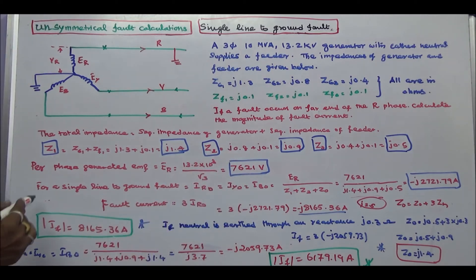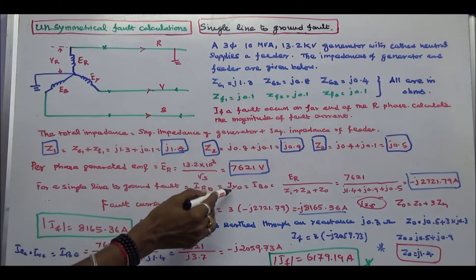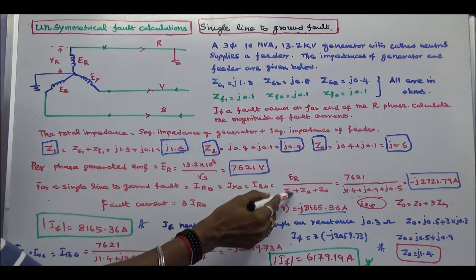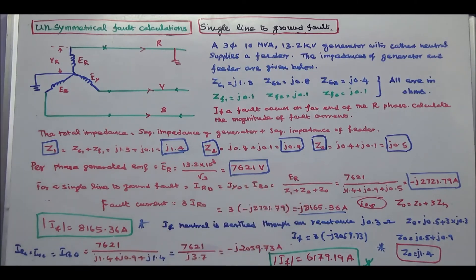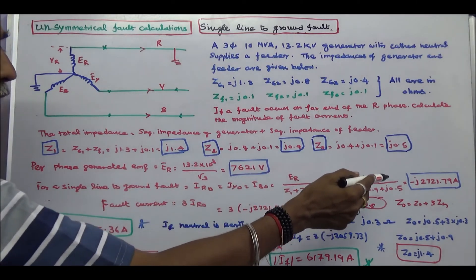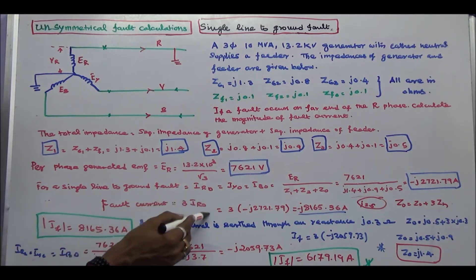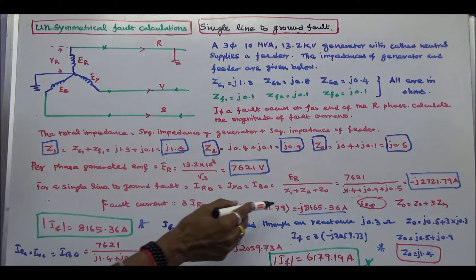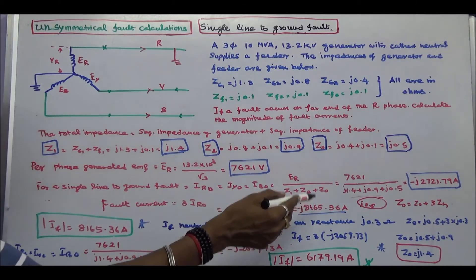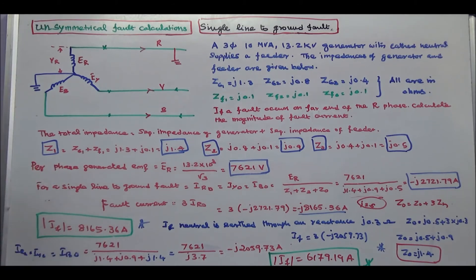We know that for a single line-to-ground fault, zero sequence current IR0 equals IY0 equals IB0 equals ER divided by (Z1 plus Z2 plus Z0). Substituting all values, the zero sequence current is −J2721.79 Amps. Fault current IF is 3 times the zero sequence current, that is −J8165.36 Amps. The magnitude of fault current is 8165.36 Amps.